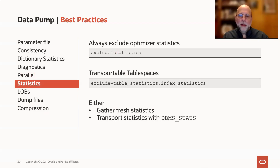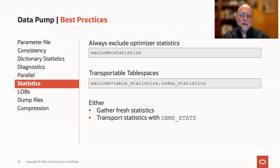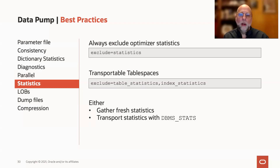Another thing for performance purposes — it may seem a little counterintuitive, but exclude statistics when you export from a database. The reason is that exporting and importing statistics are both relatively slow compared to just building the statistics on the import side after the import. The syntax for excluding statistics is slightly different for a regular dump file job than for transportable table spaces, but it's a good idea to do this in both cases. Then after the import, refresh the statistics on your target side. It'll be faster, and it'll take into account any differences in the layout on that new target system.